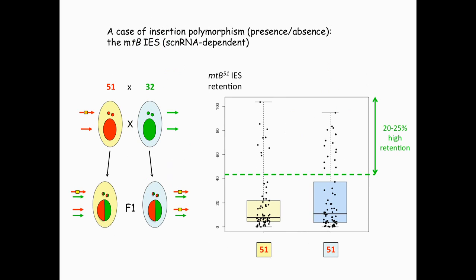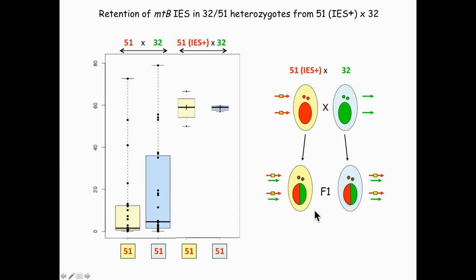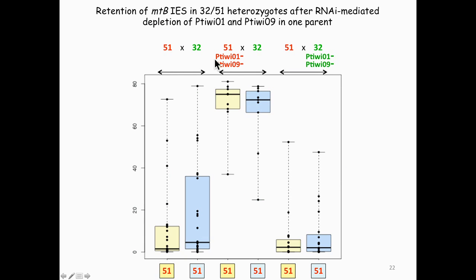There's a second case of polymorphism: where you have an IES in one allele but not in the other. In that particular case, what we saw is that there is also a significant effect on excision in a number of clones, but this does not differ between the two sides. Here we're only measuring the retention of the IES in the 51 allele, because the other allele does not have any. Similarly, if you use an IES-plus parent for the 51 strain, you can block this excision very efficiently in both F1s. And if you silence PV1 and PV9 in the 51 parent prior to the cross, you also block the excision. This is also an IES that is scan RNA-dependent.